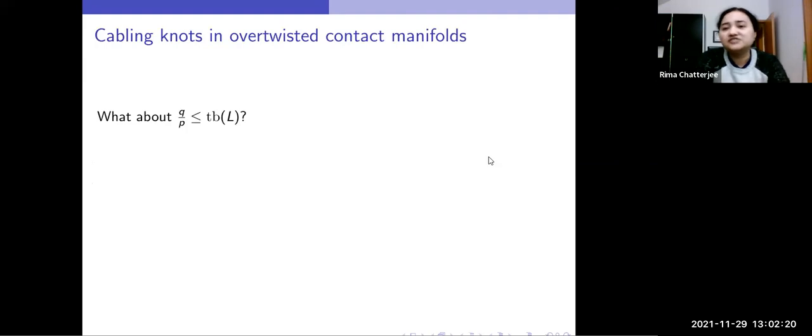So now what happens if the cabling slope is less than the Thurston-Bennequin number? Now notice that this situation can arise if we are thinking about negative cabling. But the problem here is that the technique which we used for the positive case did not really work for this case. So what we had to do is introduce an extra condition.